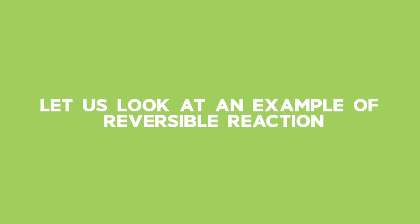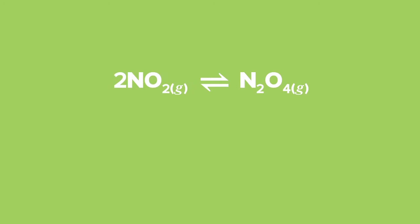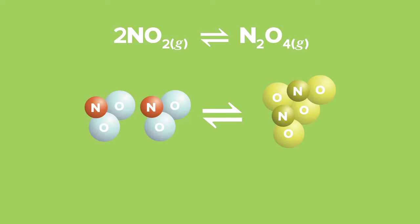Let's look at an example of a reversible reaction. Many chemical reactions give rise to products which can react in such a way as to give back the original reactants. Two NO₂ molecules react to give N₂O₄. Note that nitrogen dioxide is a reddish-brown gas, and dinitrogen tetroxide is a pale yellow gas.